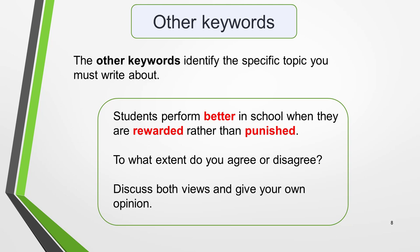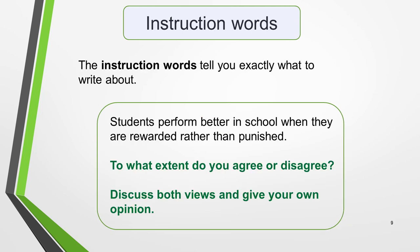Now for the instructions on the type of essay you should write. The instruction words tell you exactly what to write about. This question asks us to give our opinion and to discuss both the views stated. 25% of your marks are determined by how well you answer the question. So even if you have band 8 language skills, you could still drop down to a band 6 overall score for failing to follow the instructions.